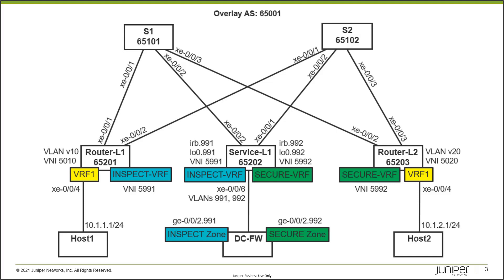So what have we done so far? We've configured the inspect VRF on router L1, the inspect VRF on service L1, the secure VRF on service L1, and the secure VRF on router L2. We also did some security policy configuration, checked the DC firewall, and verified that BGP sessions are up and functioning and that we're getting and advertising the correct routes. Let's jump back to host 1 and see what happens when we attempt to communicate with host 2.